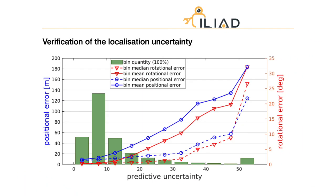At the end, quantitative result is reported to verify the localization uncertainty. This figure shows the positional and rotational errors are increasing with the predictive uncertainty from the Gaussian process.